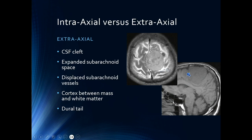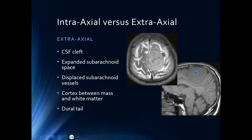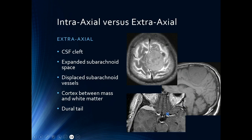You will also see, such as on this T1-weighted image, both the CSF cleft around the mass lesion, as well as cortex between the mass and the white matter. Here you can see that the white matter is deep to this, and then there's cortex in between. And sometimes you will also see a dural tail, such as here, where you see that the dura is broadly thickened with a tail along either side.